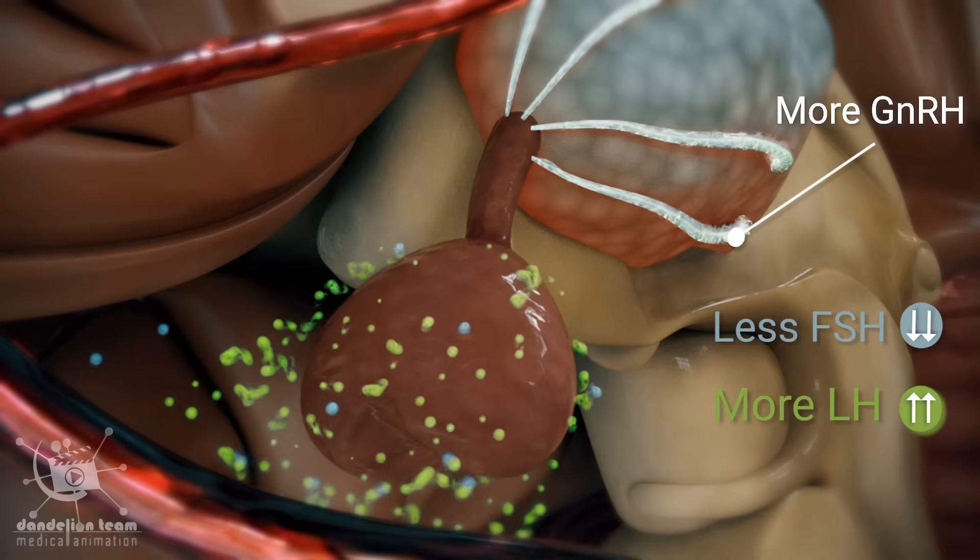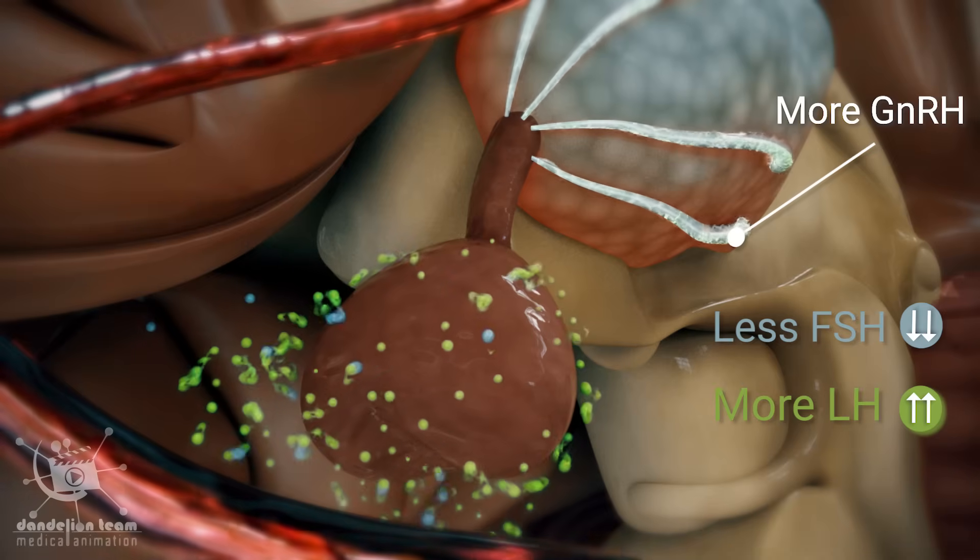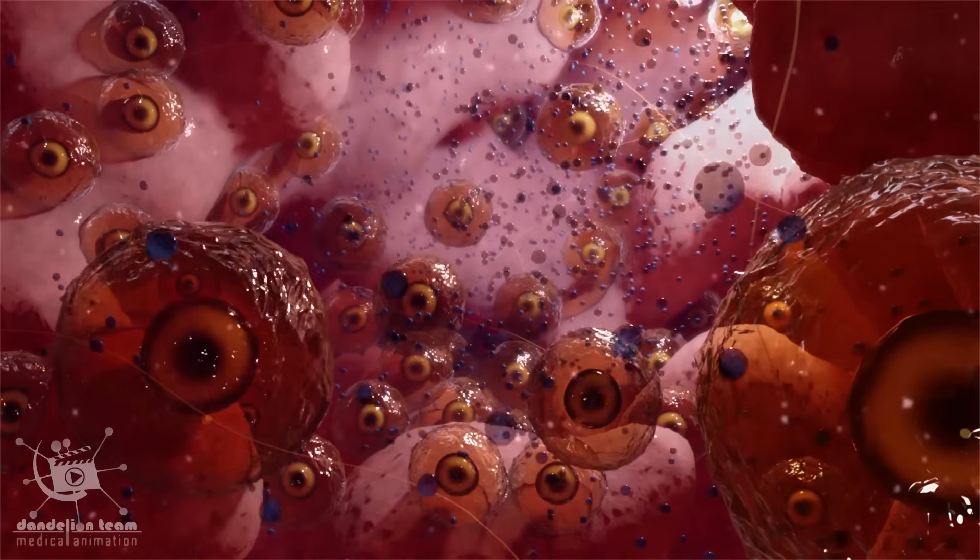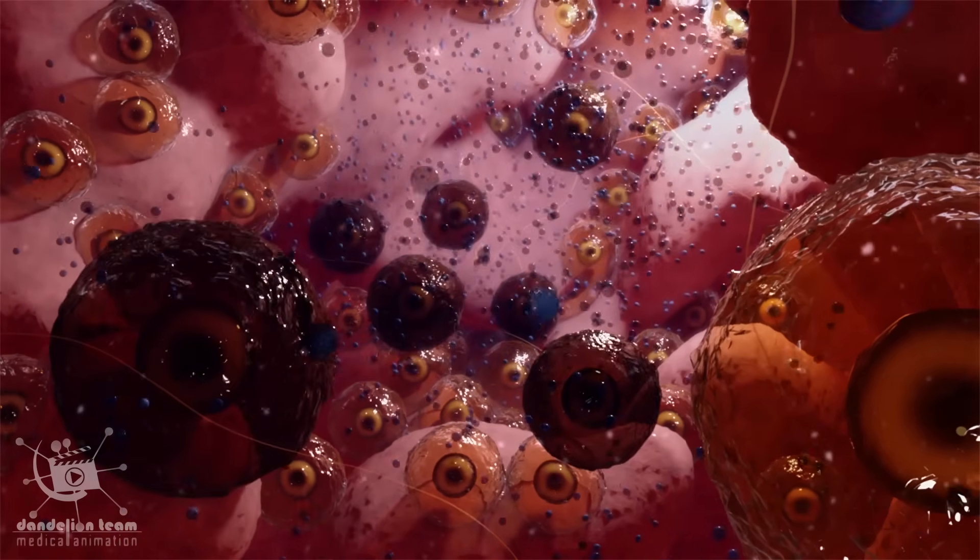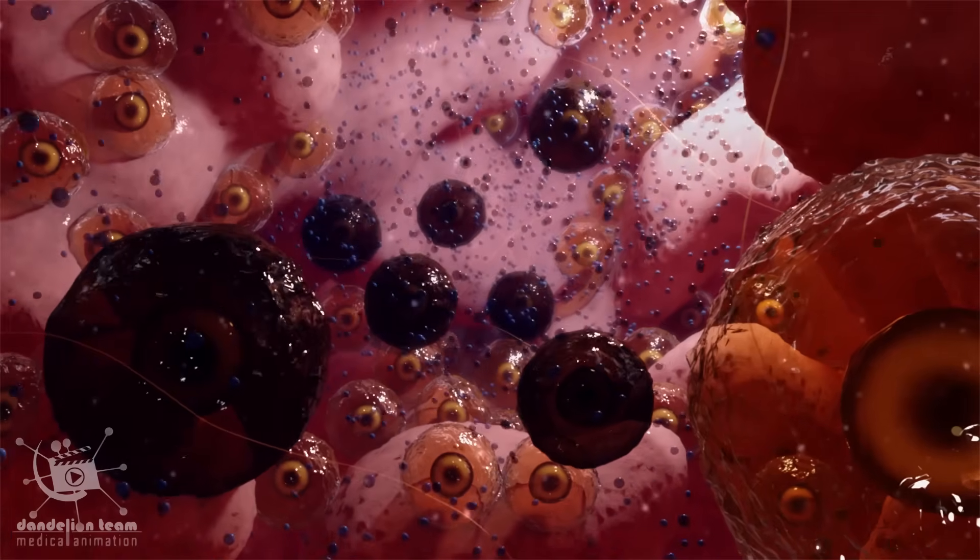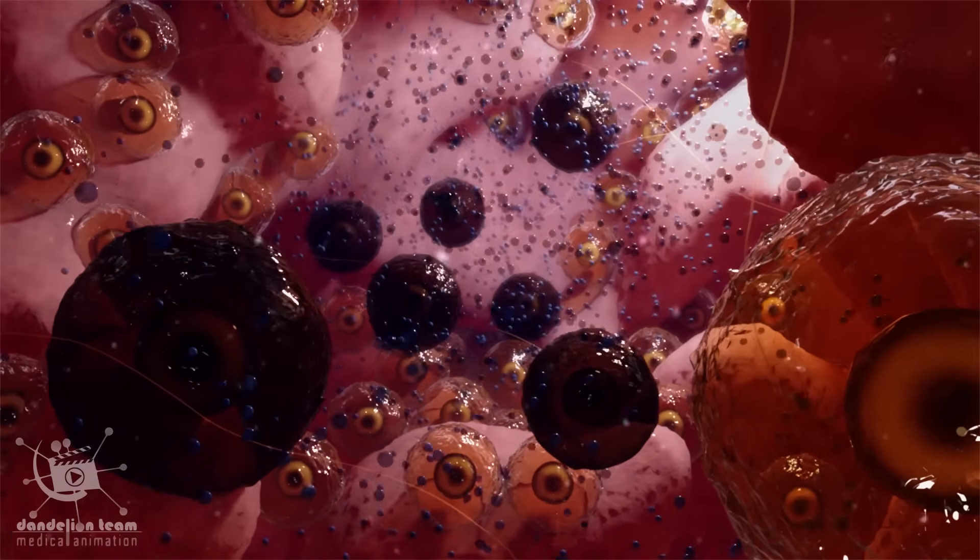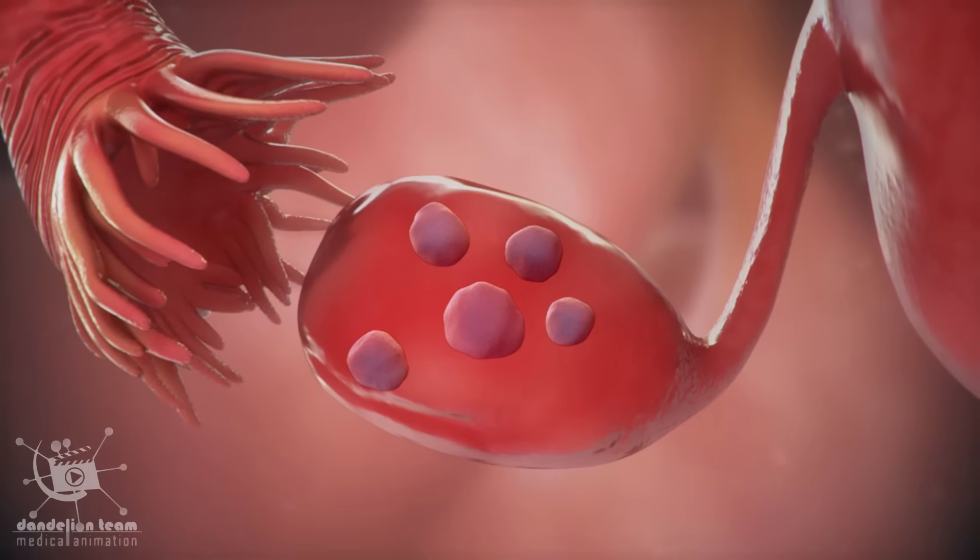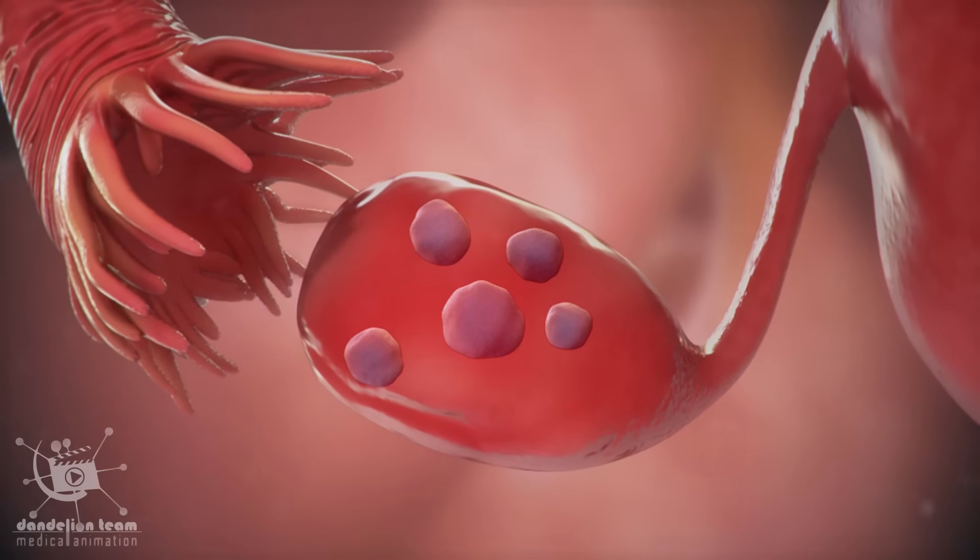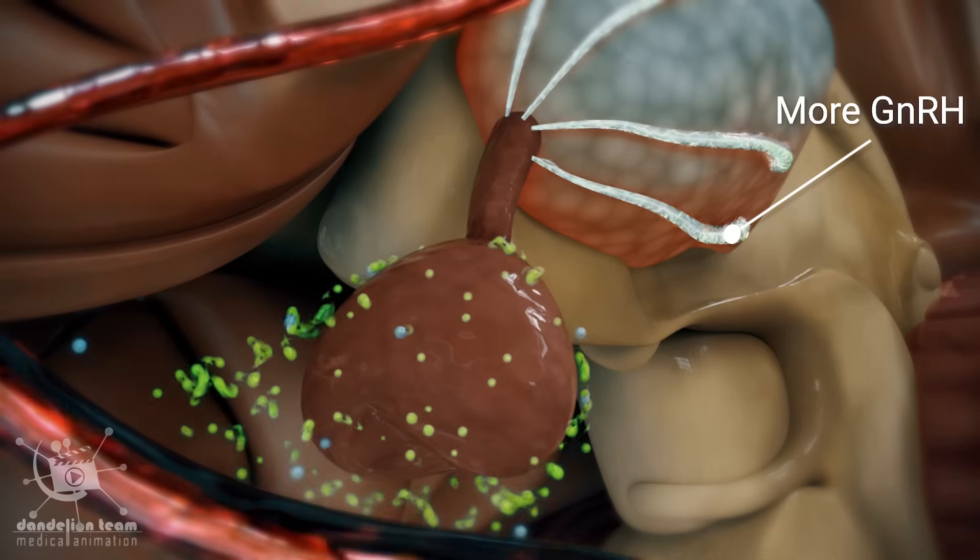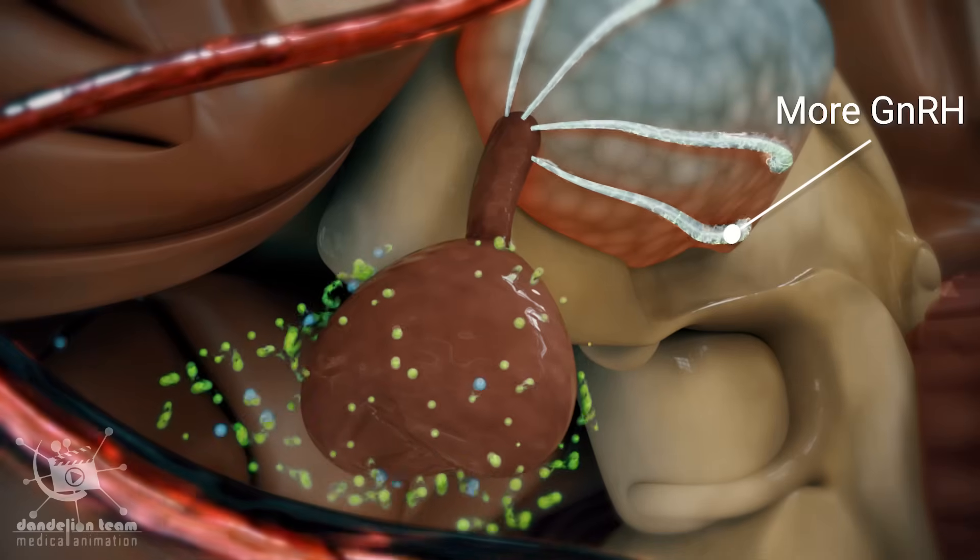This lower FSH causes follicles not to mature enough to become functional and they can't ovulate. If the follicle does not ovulate, a corpus luteum is not created. And without a corpus luteum, there is no surge in progesterone. The lack of progesterone leads to a higher pulse frequency seen in PCOS.